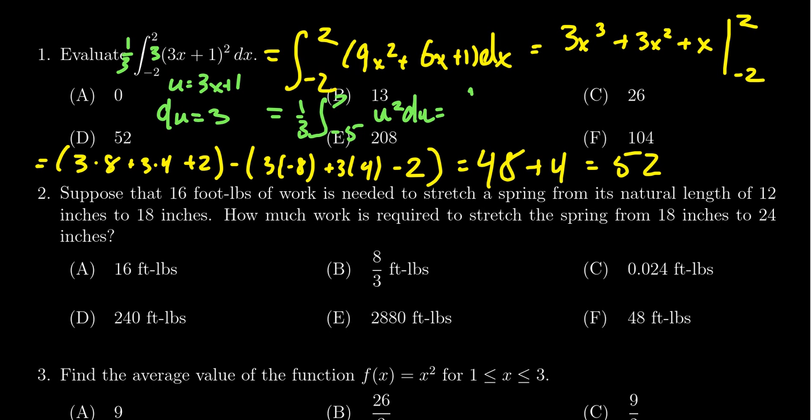You're going to get 1 ninth u cubed as you go from negative 5 to 7. And so you get 1 ninth, you're going to get 7 cubed, and then you'll get a negative, negative 5 cubed. And I'll let you finish this out and show that's equal to 52.